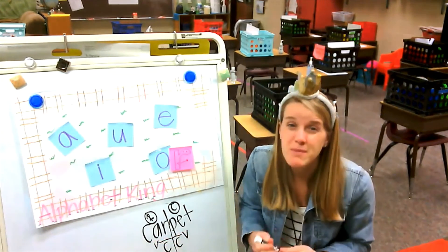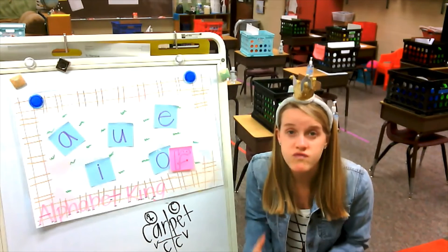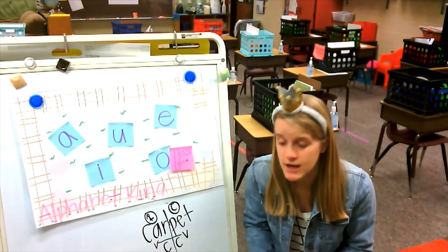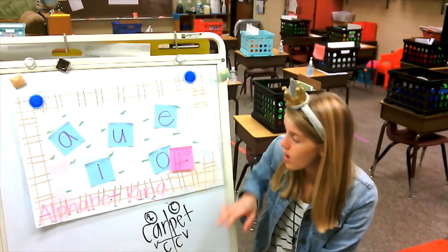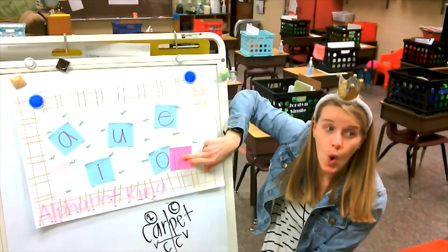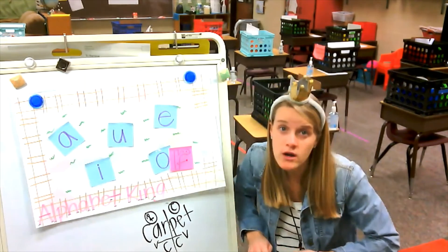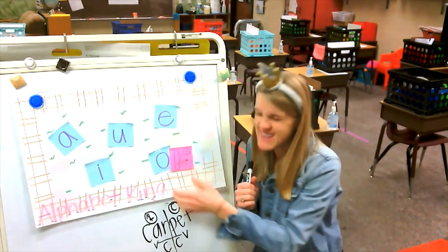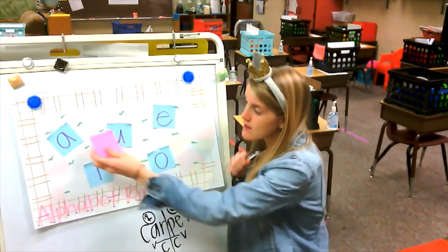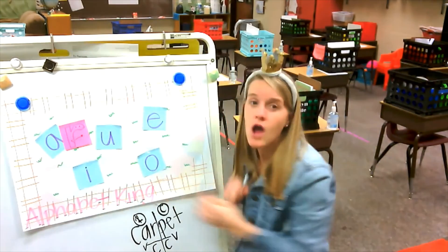So I want you to remember bossy R—oh, drives me crazy—but it's his own syllable type. You have OR, fork, or, so anytime you see OR it's or. We've seen that little word sometimes. And then you have AR, arm, ar.